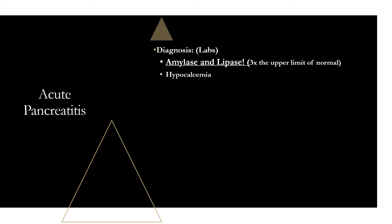Another lab finding you may see is hypocalcemia. As the pancreas gets damaged, you have necrotic fat around the pancreas that acts as a magnet for free calcium in the serum, forming calcium soaps. This depletes serum calcium, leading to hypocalcemia. You may also see an elevated ALT — sometimes three times the upper limit of normal — which is more indicative of gallstone pancreatitis specifically.